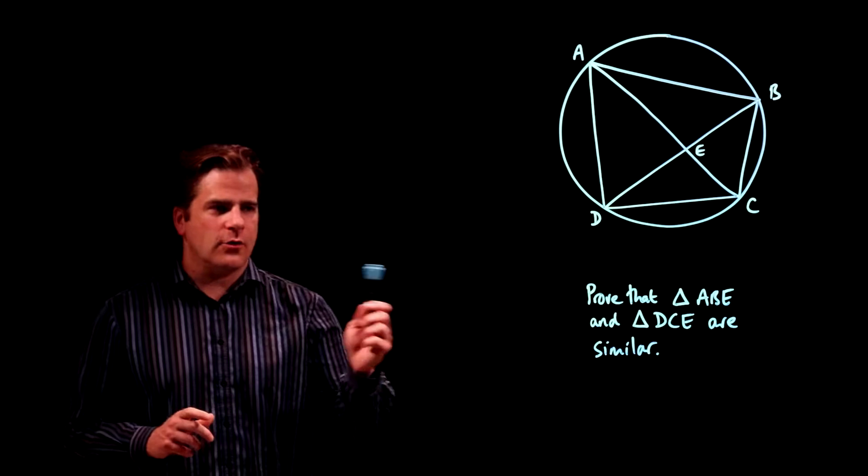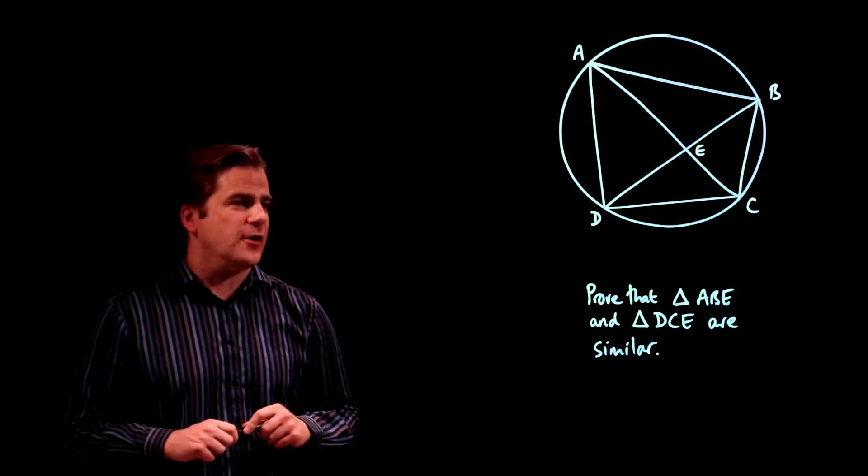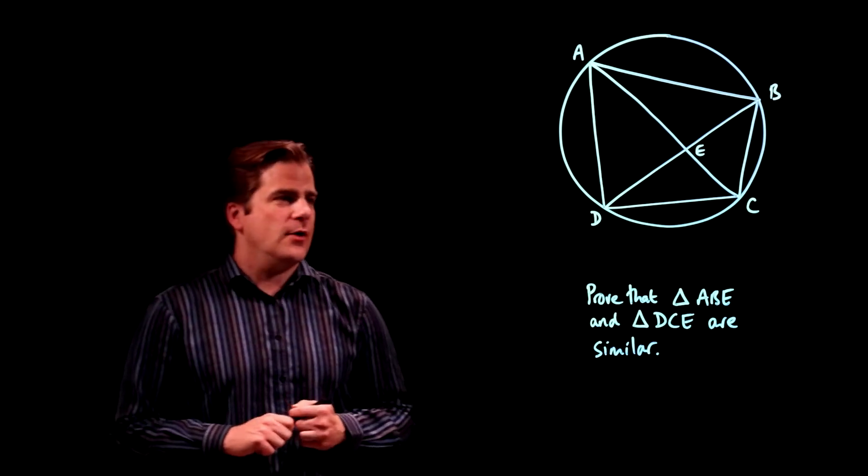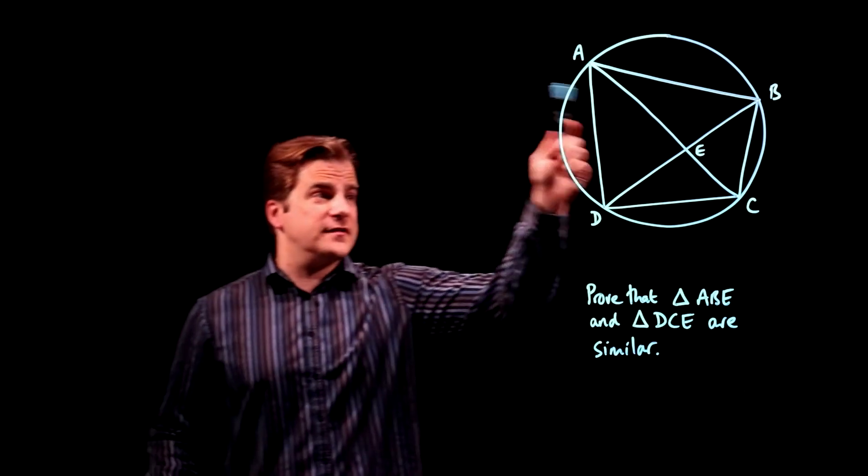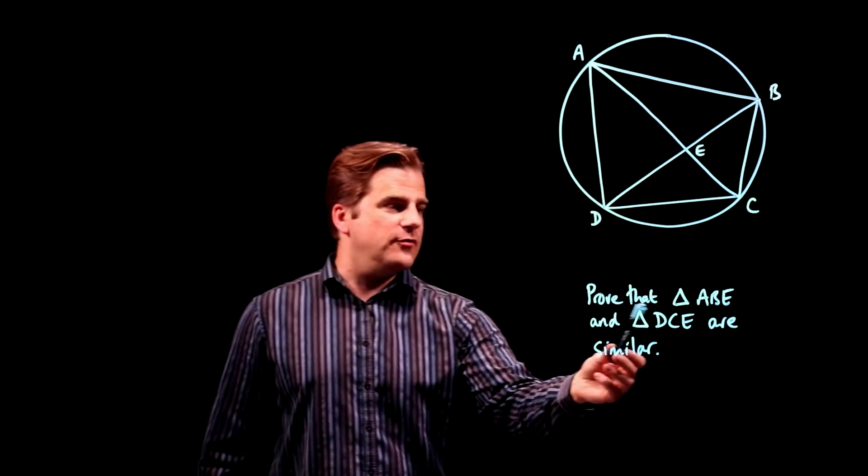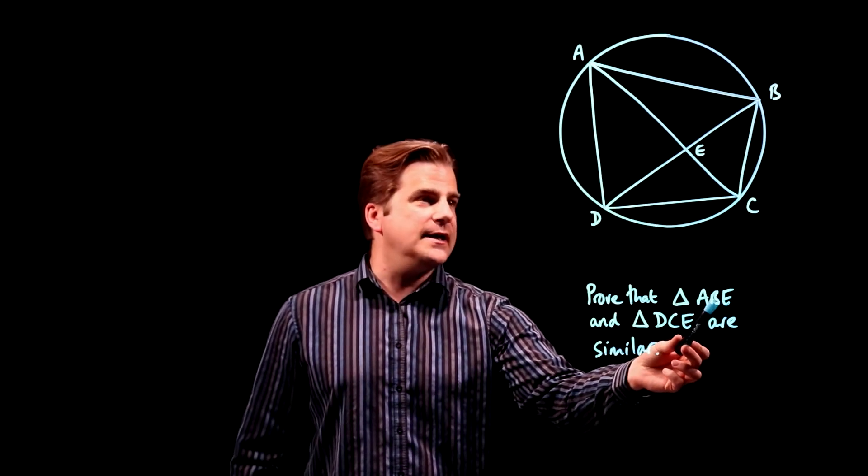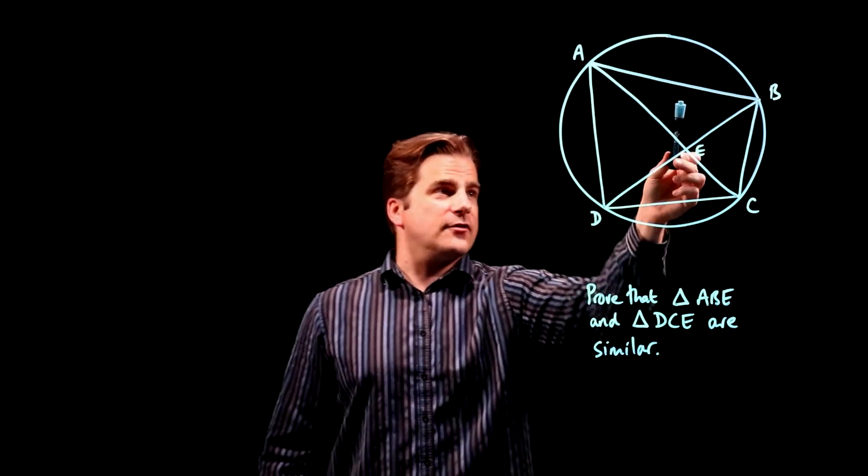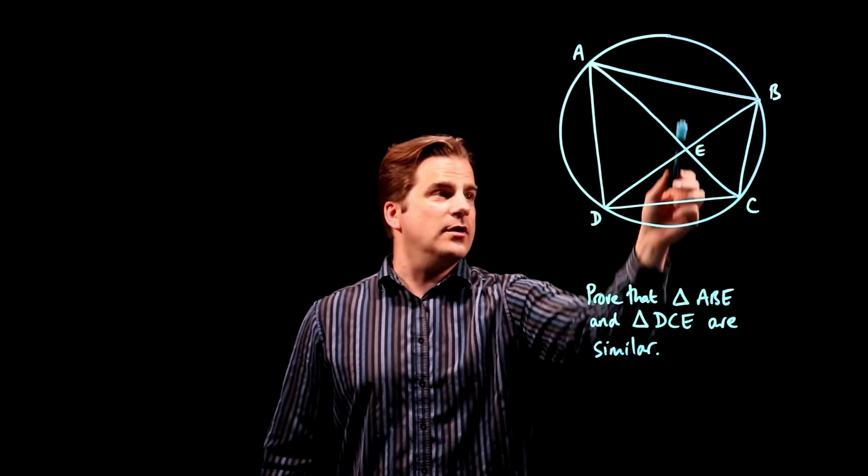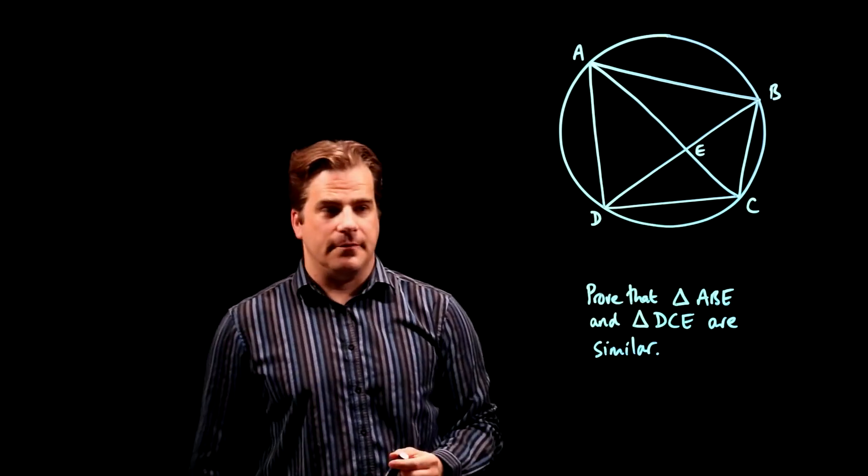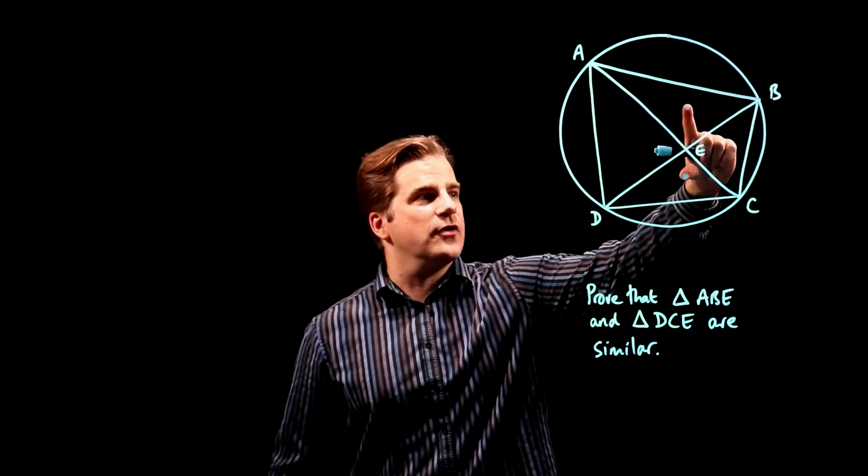You may be able to hear a lot of birds tweeting outside during this video, but hey ho. OK, so we've been given a circle and we have to prove that ABE, that's that triangle there, and triangle DCE, that's this one, are similar. OK, so these two triangles.